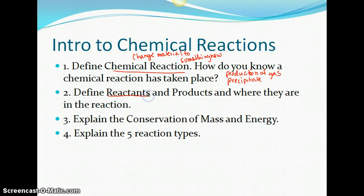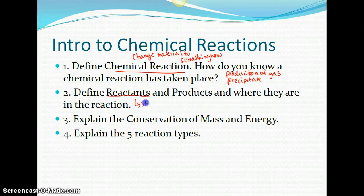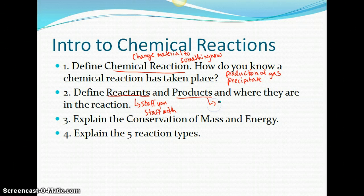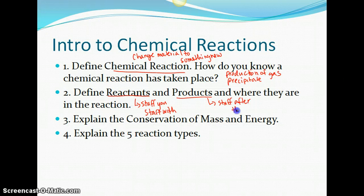Reactants are what you start with. So they come before the arrow in a chemical reaction. And products are the stuff you end with after the reaction.